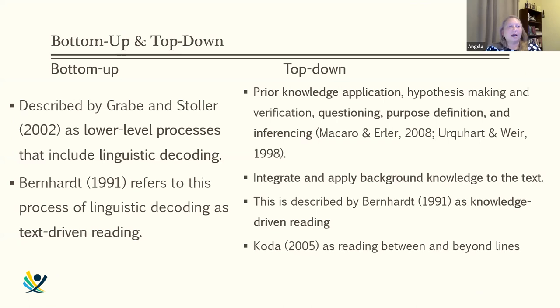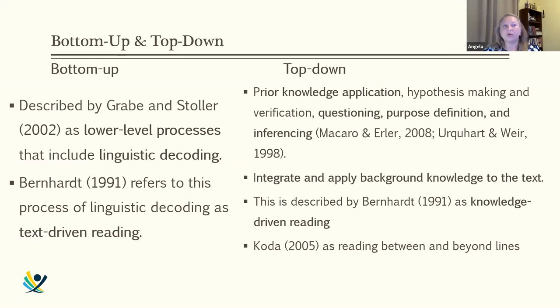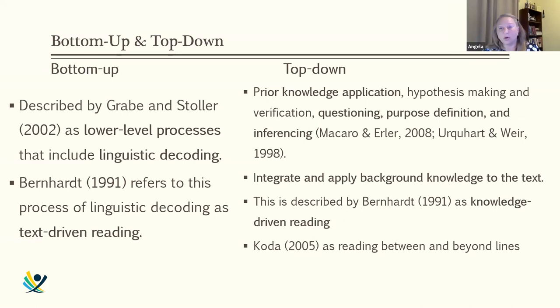Bottom-up reading involves lower-level processes: going from letters to sounds to words. It is very linguistic and text-driven — you are essentially just translating symbols on the page into their corresponding words. Top-down reading, by contrast, involves taking what you know about the topic — not just words and language — and applying it to the text. This is when you predict what's coming next, question the text, and consider the author's purpose.